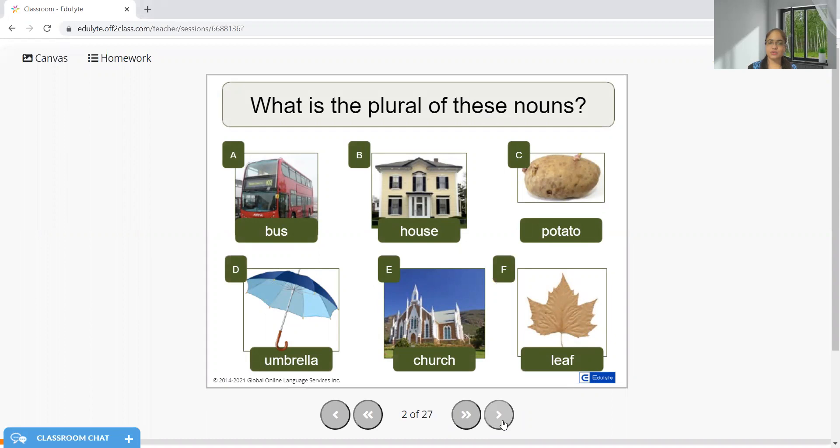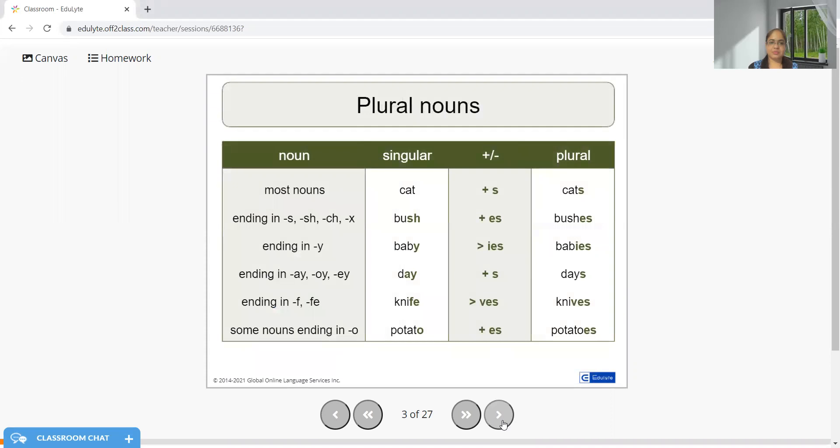What is the plural of these nouns? Can you try to recall? Let me help you: buses, houses, potatoes, umbrellas, churches, leaves. I'm sure you remember the spelling too. So this is the chart that helps you analyze what can be the plural of the singular nouns. There are some examples: cats, bushes, babies, days, knives, potatoes.